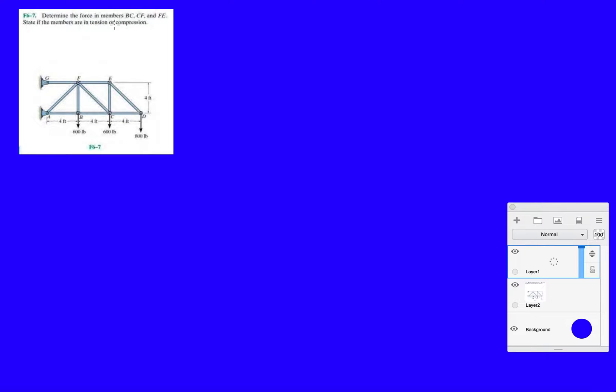So let's get started. They want you to determine the force in members BC, CF, and FE. There's kind of a trick when you have an overhanging beam like this. Notice how the supports are over here, you might not need to determine the reactions at G and A.